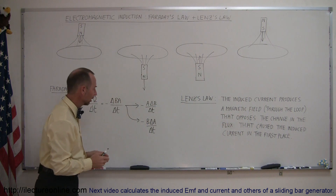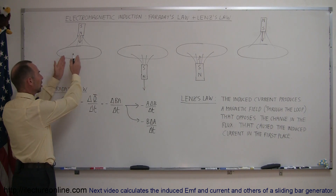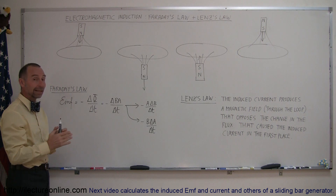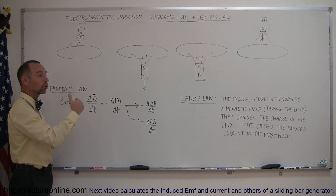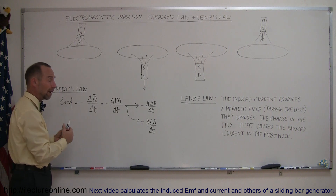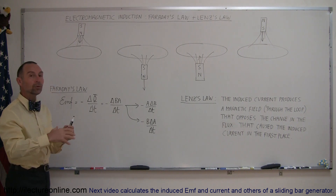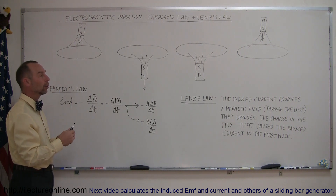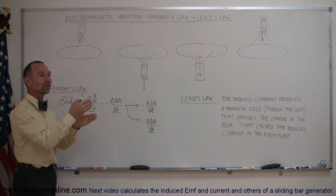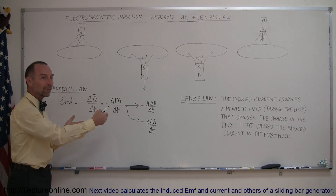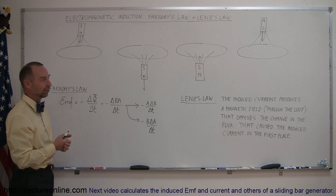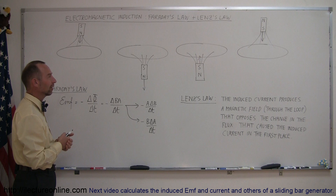Let's repeat that: we have a changing flux through a loop that produces an EMF. That EMF produces a current. That current, which is induced by the induced EMF, will produce its own magnetic field, which will oppose the change in the flux that caused the induced EMF and the induced current in the first place. That's really a mouthful.